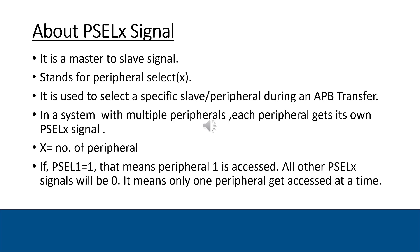PSEL is a master-to-slave signal, standing for peripheral select. It is used to select a peripheral during a transfer. In a system with multiple peripherals, each peripheral gets its own PSEL signal, where x indicates the peripheral number. So if PSELx is 1, it means that peripheral is selected and all other peripherals will not get access — their PSEL signals remain 0.